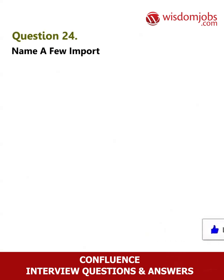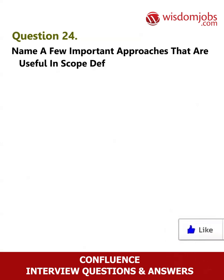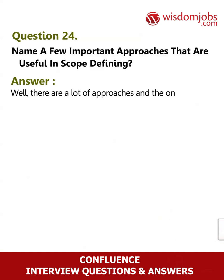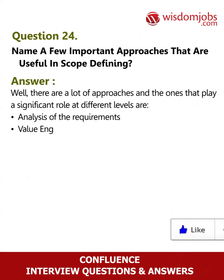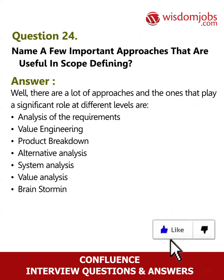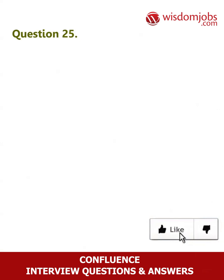Question 24: Name a few important approaches that are useful in scope defining. Answer: There are a lot of approaches, and the ones that play a significant role at different levels are: Analysis of Requirements, Value Engineering, Product Breakdown, Alternative Analysis, System Analysis, Value Analysis, Brainstorming, and Pairwise Comparison.